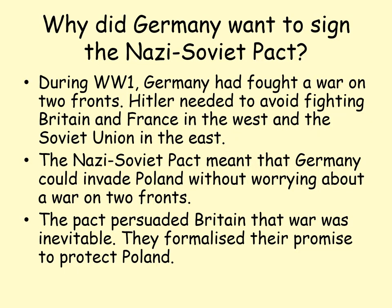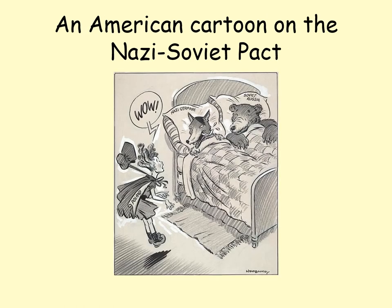For Germany, the pact meant they could avoid a war on two fronts and take control of Poland without worrying about how the Soviet Union would react. For Britain, the pact formalized that war was now inevitable and that Hitler could not be trusted. An American cartoon on the Nazi-Soviet Pact shows Poland presented like Little Red Riding Hood, with Germany and the Soviet Union having taken control of Poland's territory — Poland characterised as completely defenceless. This shows the real significance of the Nazi-Soviet Pact as a key event on the road to World War II.